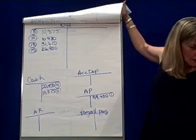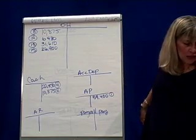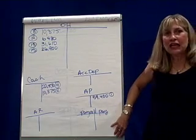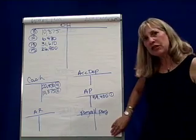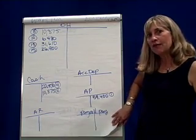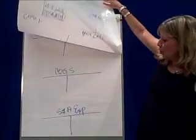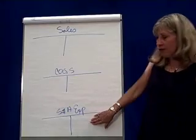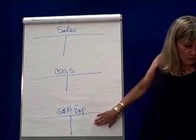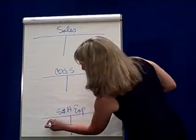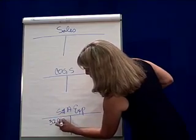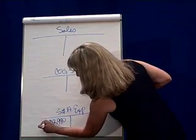And then the final one says that we have sales commissions of $32,980. Well, sales commissions is a selling and administrative expense. And so that would go in S and A expenses, or selling and administrative expenses. $32,980 on the 15th.